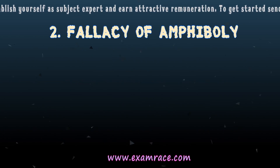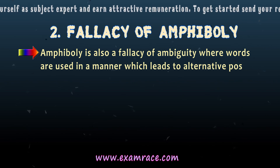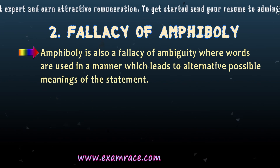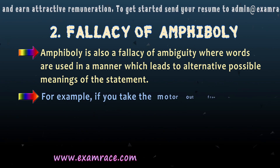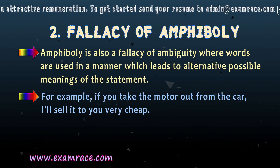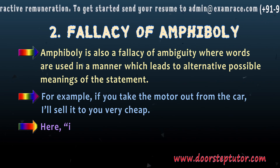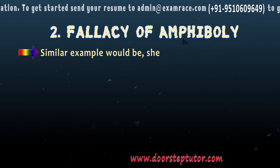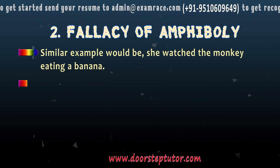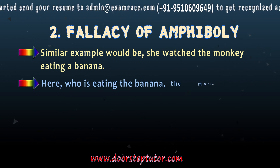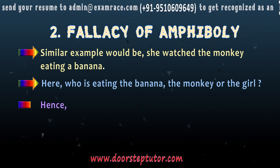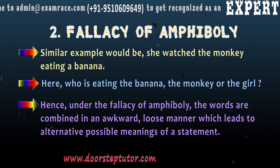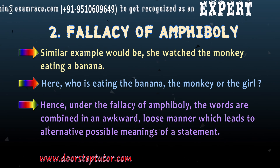Fallacy of Amphibaly: Amphibaly is a fallacy of ambiguity where words are used in a manner that leads to alternative possible meanings of a statement. For example: if you take the motor out from the car, I'll sell it to you very cheap — here 'it' could refer to the motor or the car. A similar example: she watched the monkey eating a banana — here, who is eating the banana, the monkey or the girl? Under amphibaly, words are combined in an awkward, loose manner, leading to alternative possible meanings.